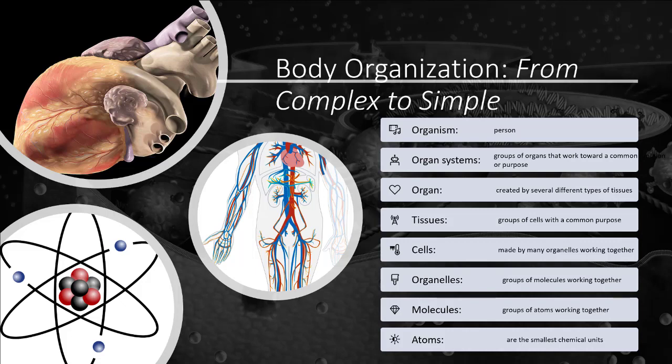Body organization from complex to simple starts from the organism, the whole person. You can subdivide that whole person down into organ systems, whether it's the integumentary system, skeletal system, or cardiovascular system. Within a given system, say cardiovascular, a single organ would be the heart or blood vessels. When you break that down even further, you can see it is made up of different tissues.